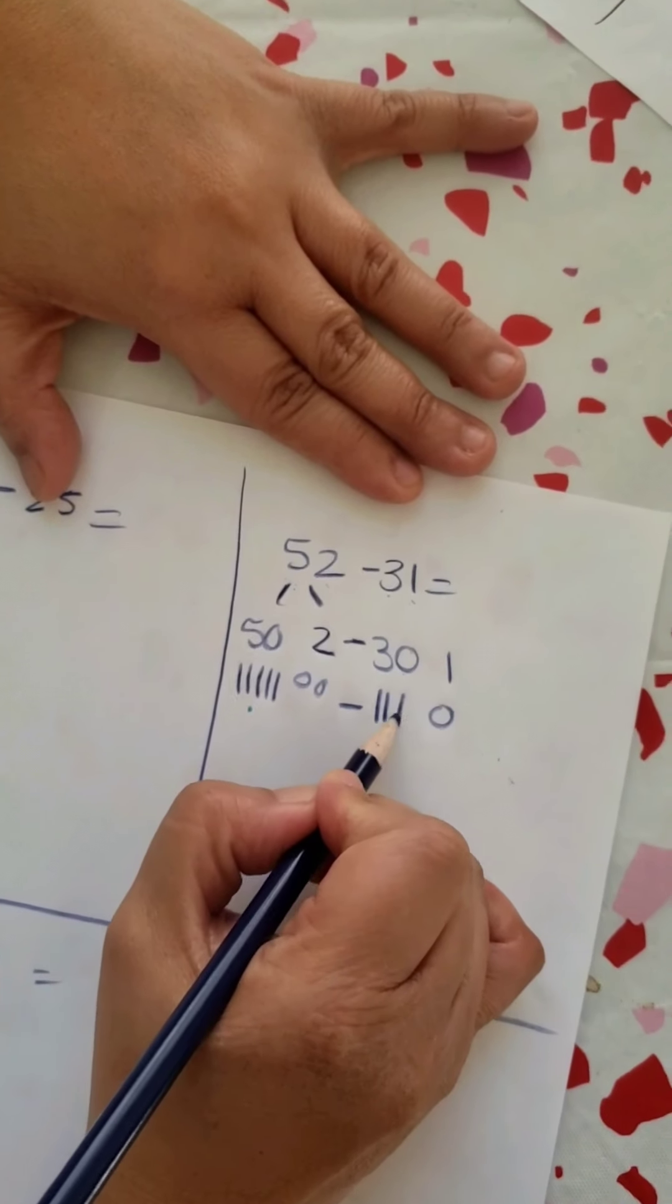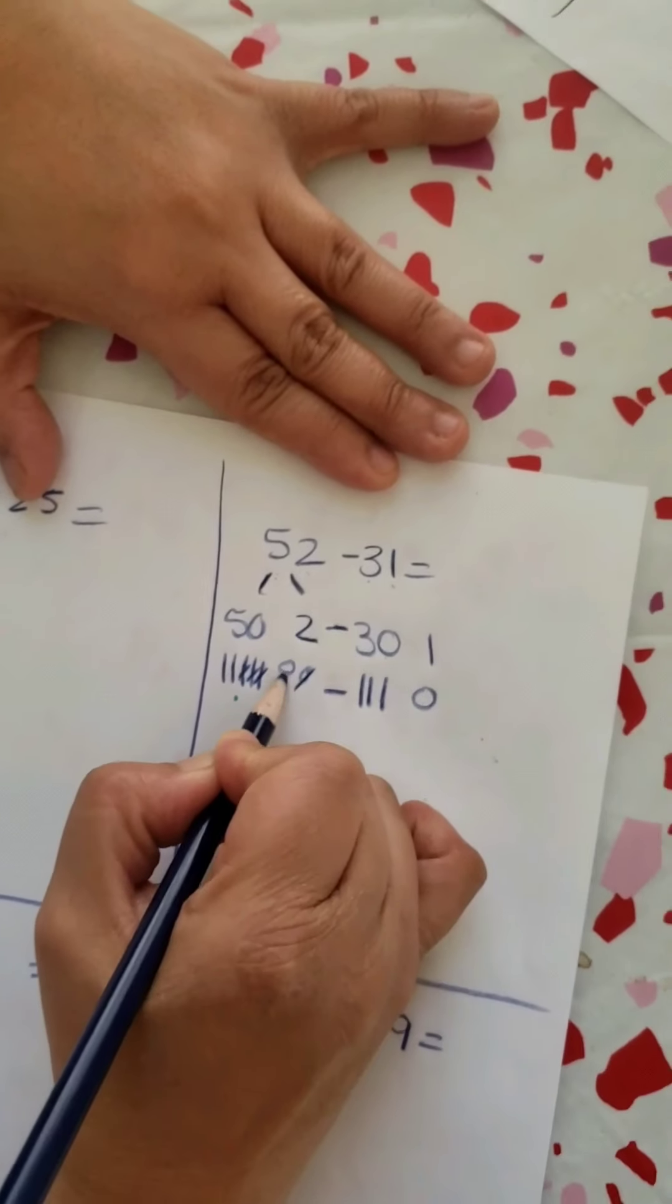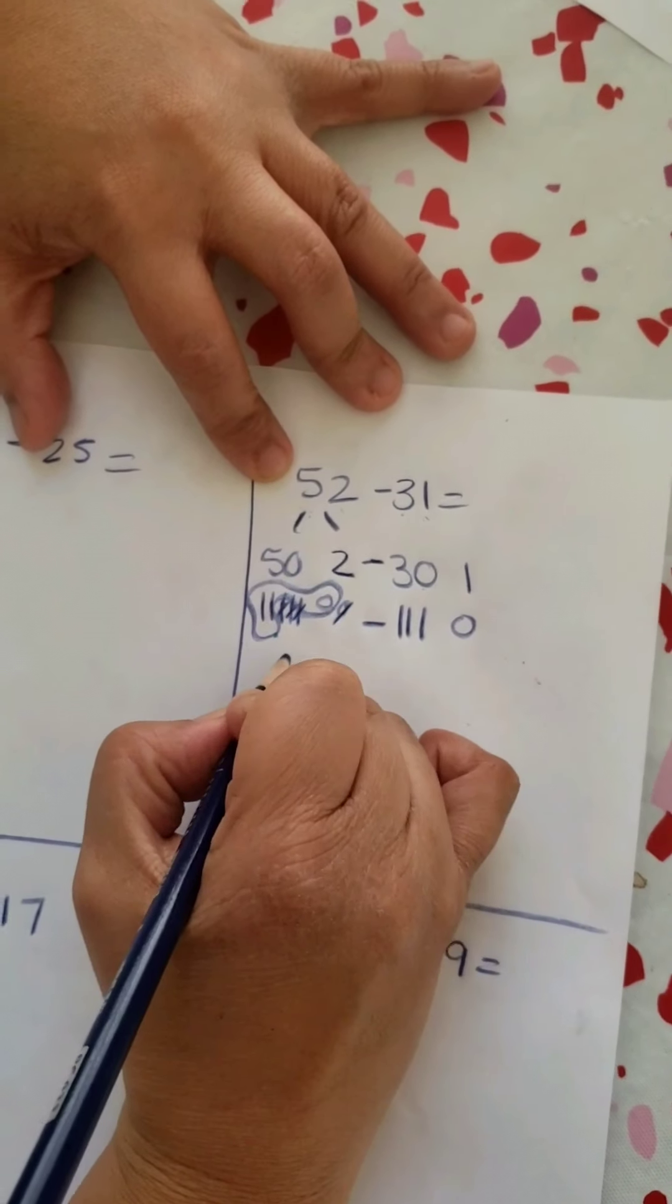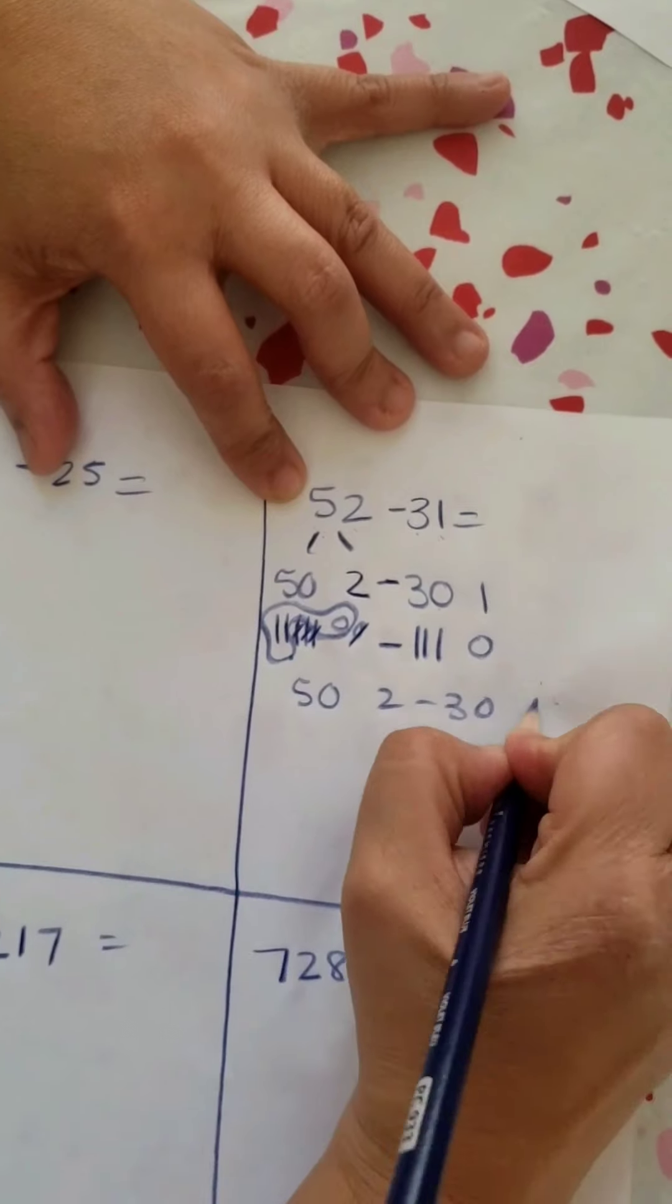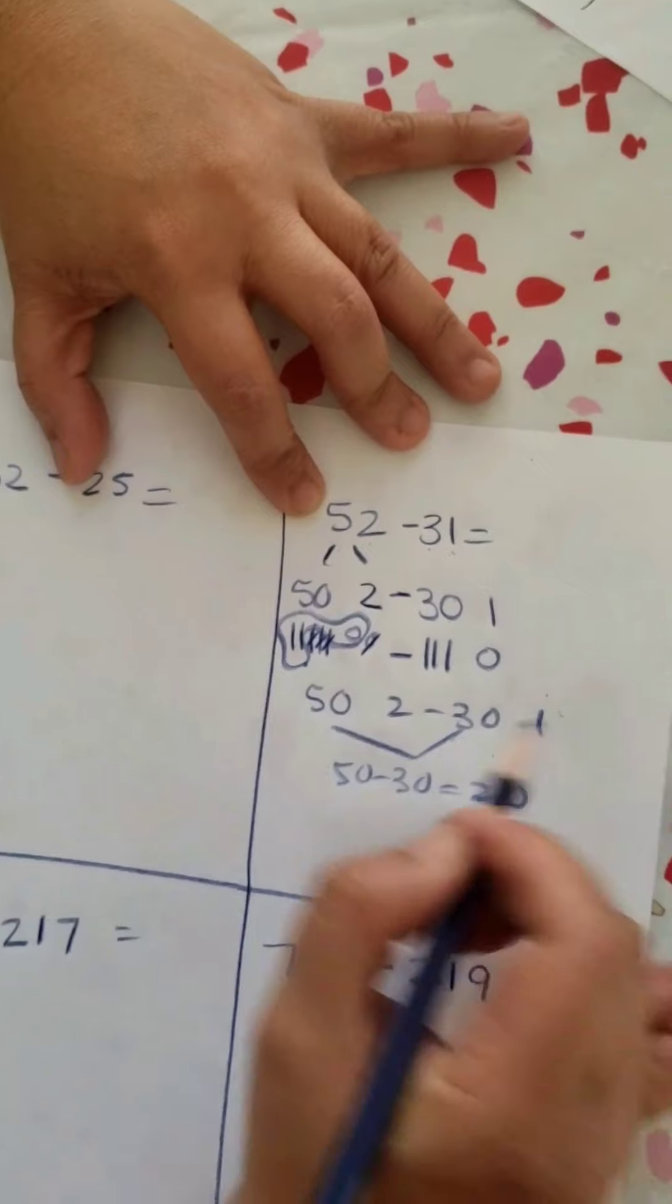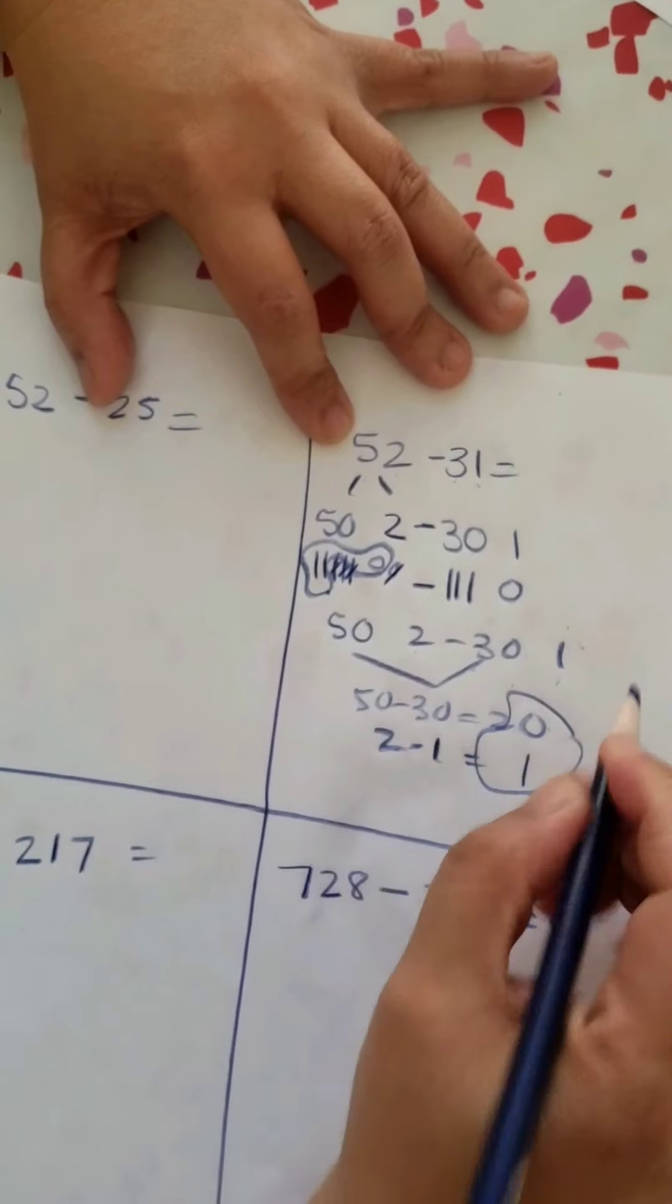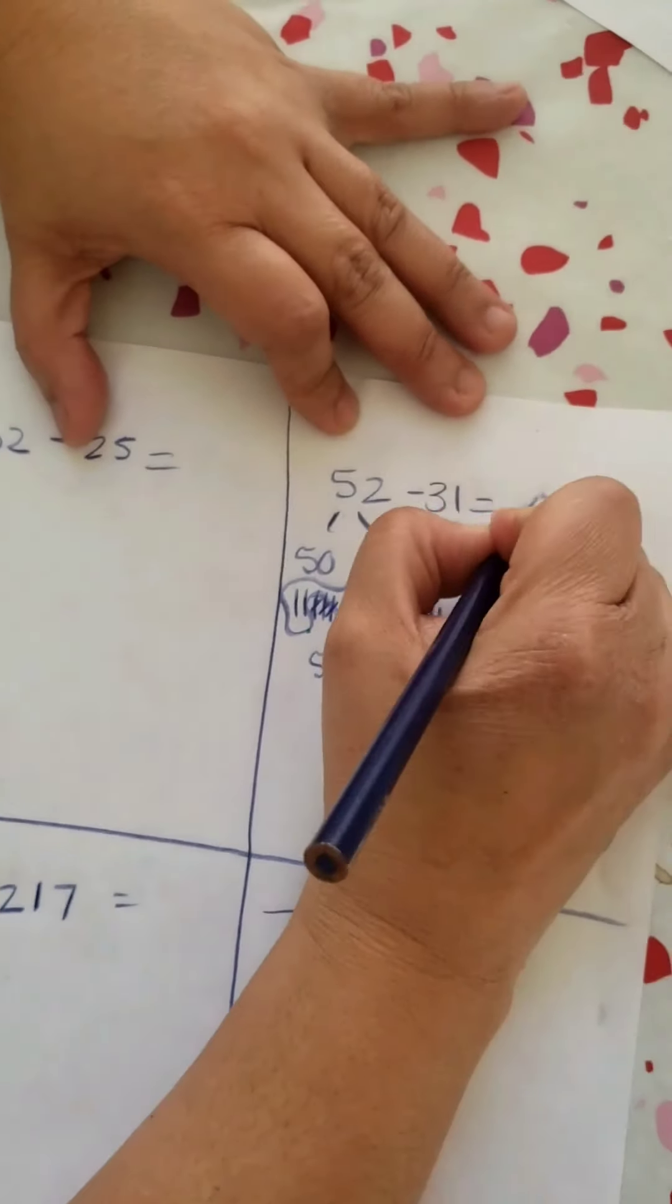So I know if I'm subtracting these two: 1, 2, 3, 10, 20, and 30, and 1, and I know my answer is 21. But if I'm doing it this way, I know it's 50 and 2, 30 and 1. I know that 50 minus 30 equals 20, and I have 2 minus 1 because I'm subtracting my similarities is 1, and I know that it's 20 plus 1 equals 21. Same answer, different strategy.